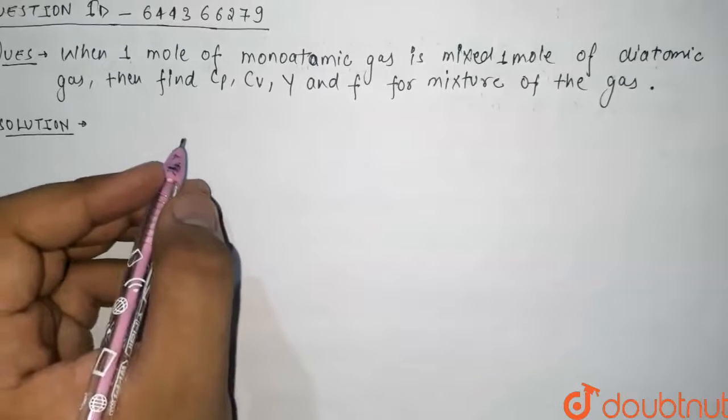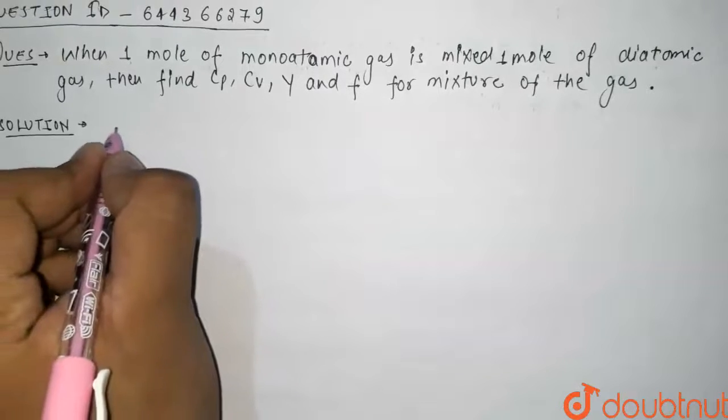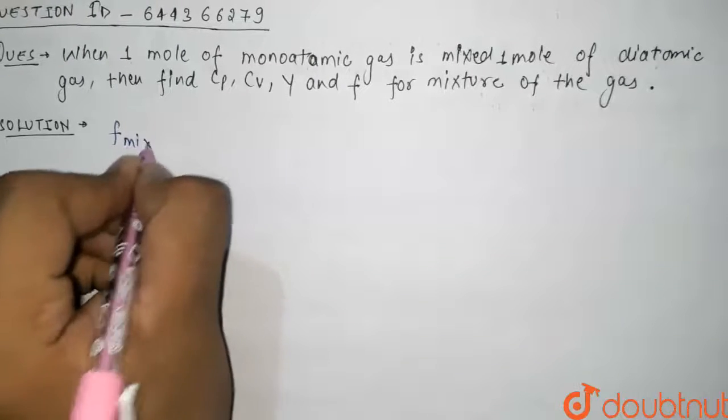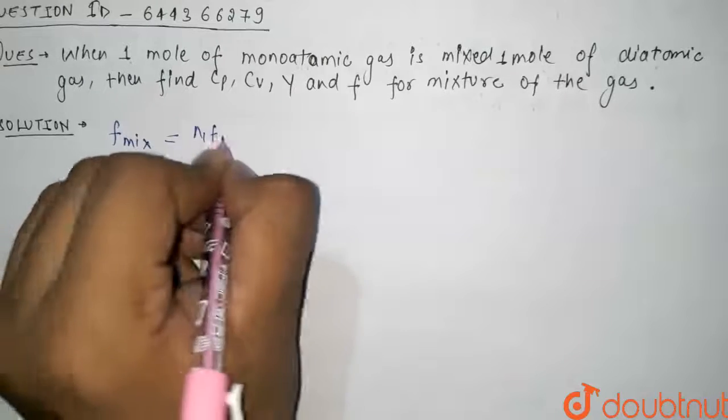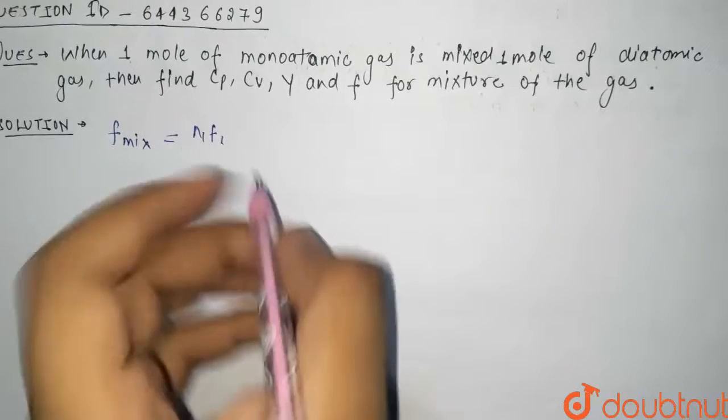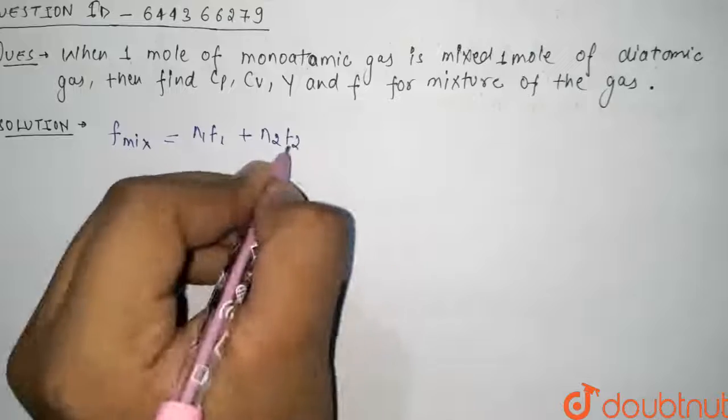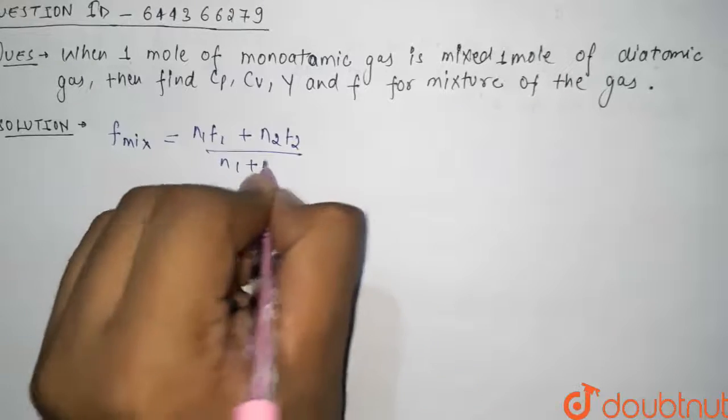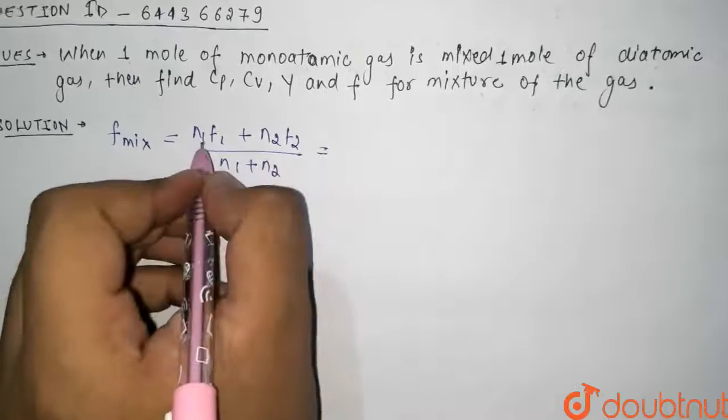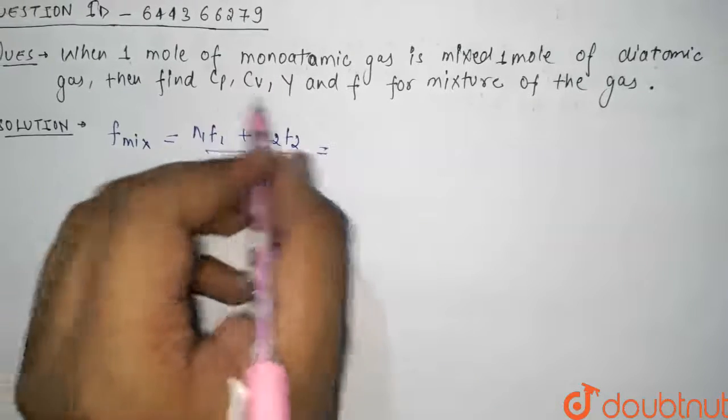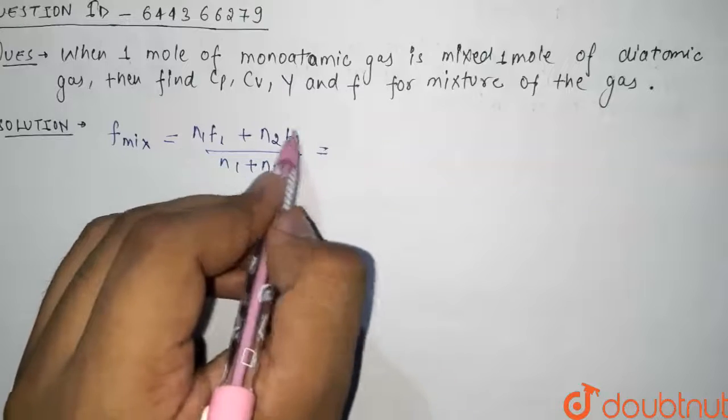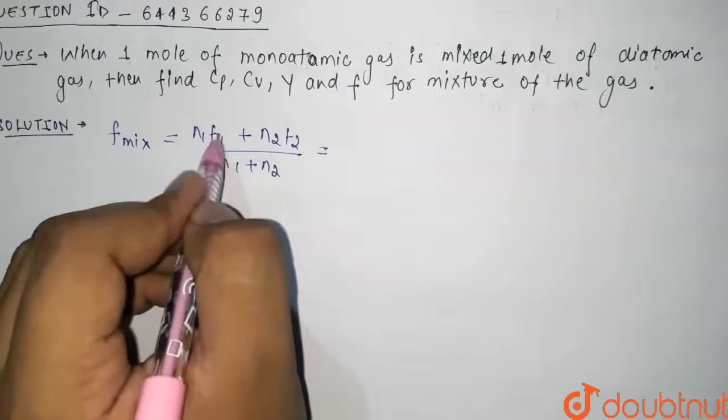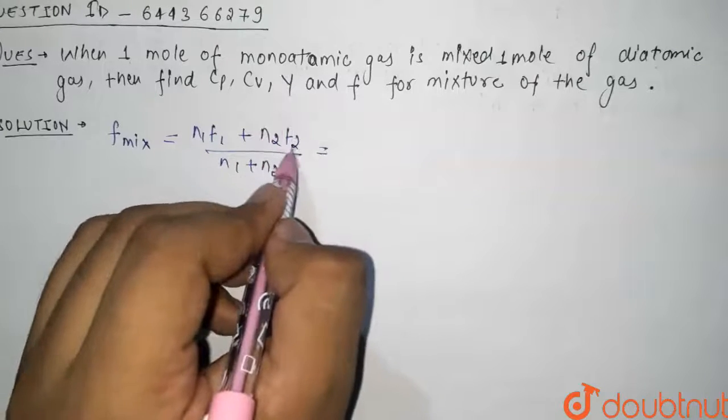Firstly, we will find F mixture, that is the degree of freedom of the mixture. So F mixture is given as N1F1 plus N2F2 divided by N1 plus N2. Here N1 and N2 are the moles of the monatomic gas and moles of the diatomic gas, and F1 is degree of freedom for monatomic gas and F2 is the degree of freedom for diatomic gas.